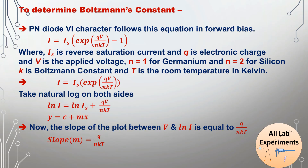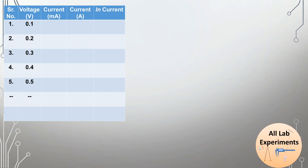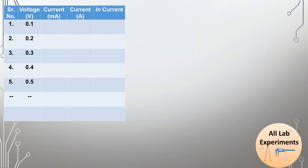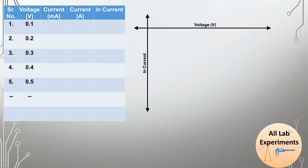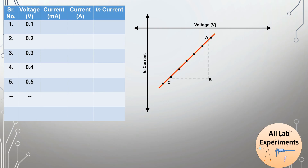To determine the Boltzmann constant, we modify the forward bias table: we convert the current from milliamperes to amperes and add a fourth column with the natural logarithm of the current. We then plot voltage along the x-axis and ln(I) along the y-axis — the values appear on the negative y-axis. We draw two perpendicular lines on this graph and calculate the slope as AB divided by BC.